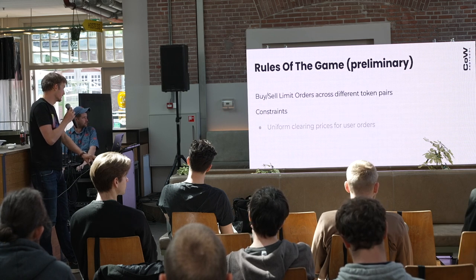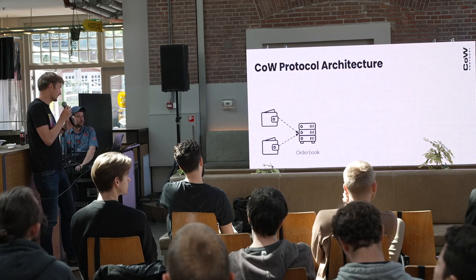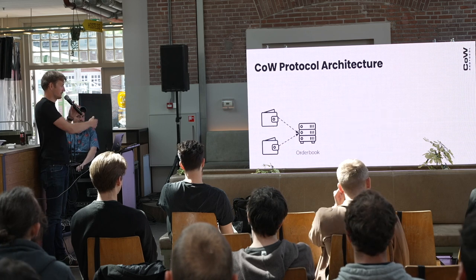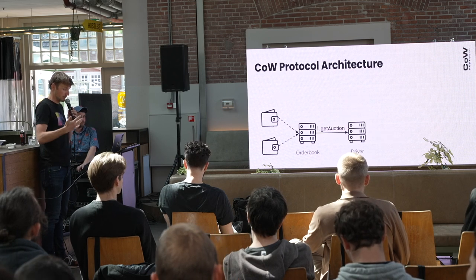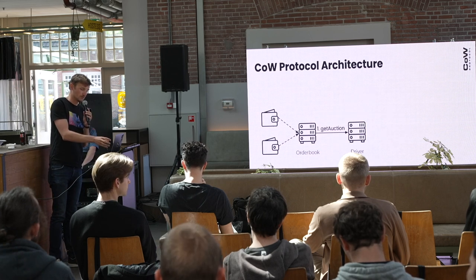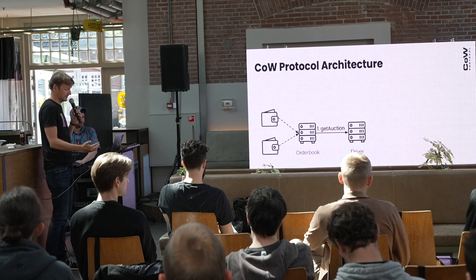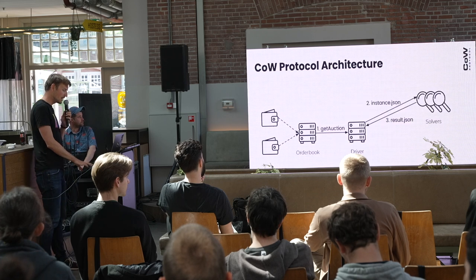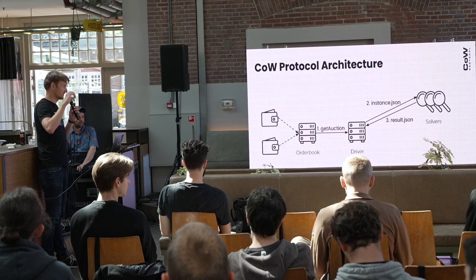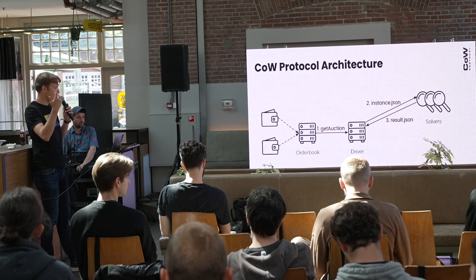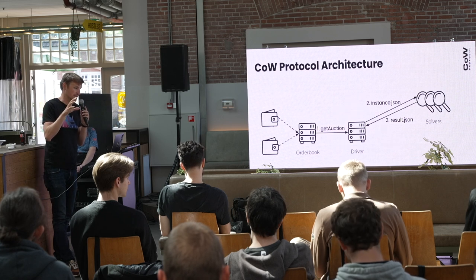Let's look at the high-level architecture. Users place orders from their MetaMask account or bots into what we call an order book — a database collecting all orders in a batch. We have a central component called the driver that periodically initiates the batch auction, asks the order book for all current orders, and then sends an HTTP request to all registered solvers, passing the instance.json — all orders in the current batch — and expecting a JSON response giving the recipe for how the batch should be matched: which orders are touched, which AMMs are used.